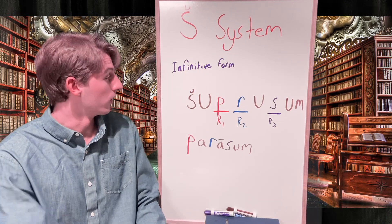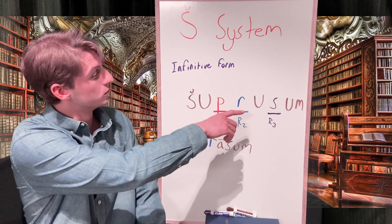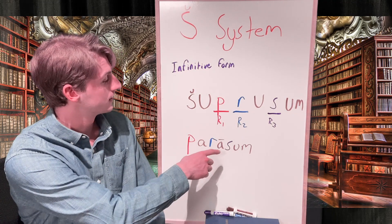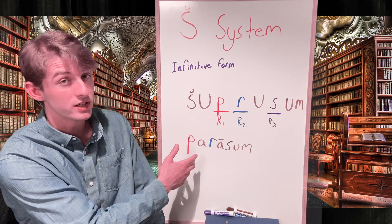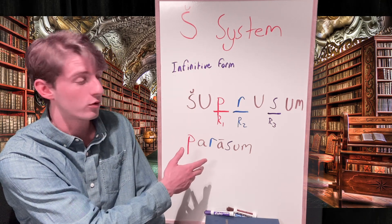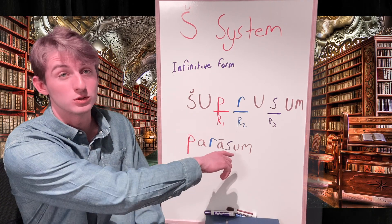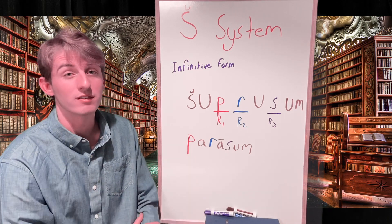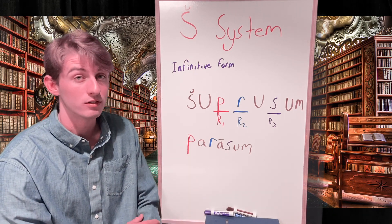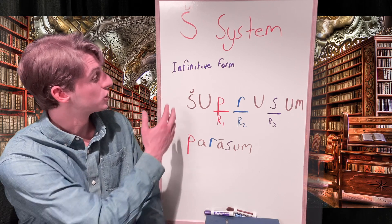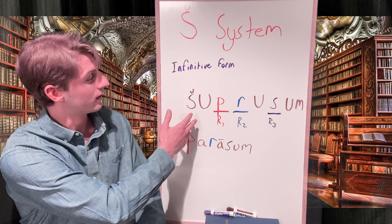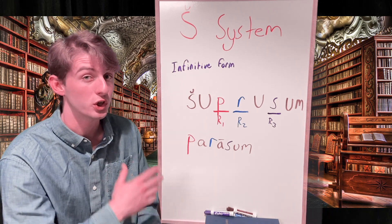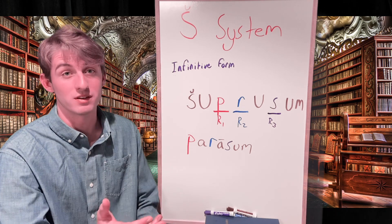Here we have the word shuprusum, which comes from the root letters p, r, and s, which in our dictionary or G system infinitive form would appear as parāsum. In the G system these root letters give us the meaning 'to divide,' but in the Sheen system infinitive these same root letters give us the meaning 'to cause to divide' or 'to help to divide.'